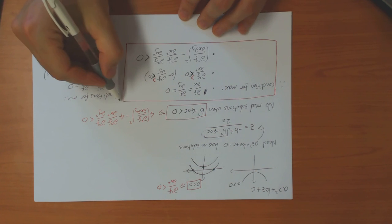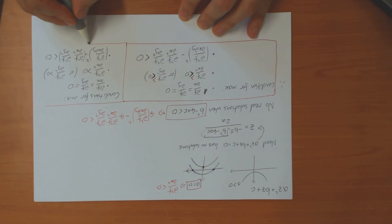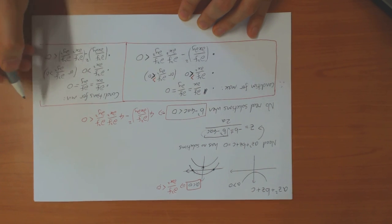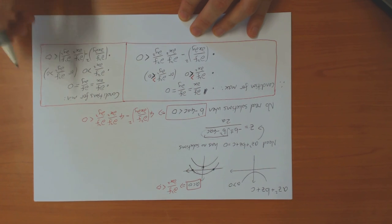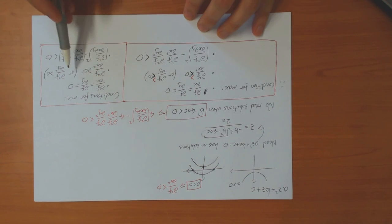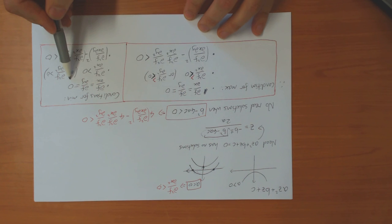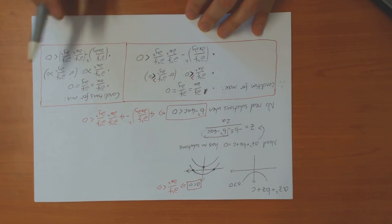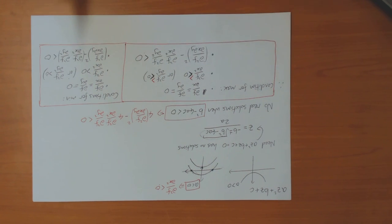So these define what's known as the second derivative test in two dimensions. If you want to find whether a function has a minimum or maximum, you check that the first derivative is zero and then the second derivatives satisfy these conditions. In the next video I'll do some examples of this.